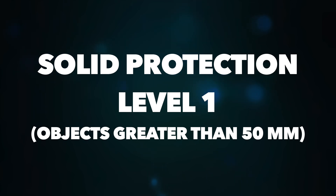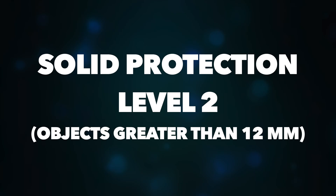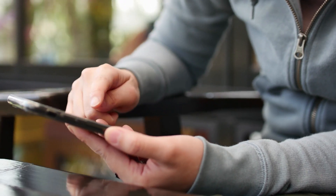In solid protection, Level 1 means any object greater than 50 mm cannot enter your device — for example, your hand is greater than 50 mm so it can't be inserted. Level 2 means any object greater than 12 mm cannot enter the device — a simple example is fingers, which are greater than 12 mm.